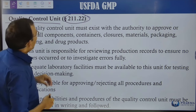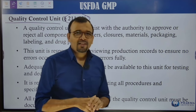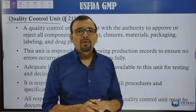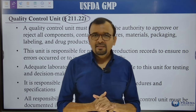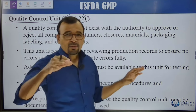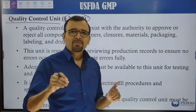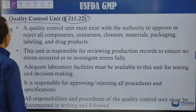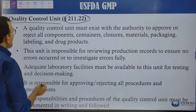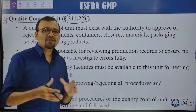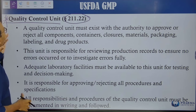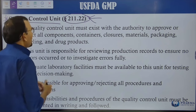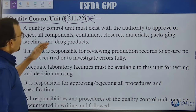Part 211 talks about GMP for drug products. There is another part — Part 210 — for GMP for drug substances. Part 211 covers drug products like capsules, tablets, injectables, etc. In the organization, the first point is the Quality Control Unit, a very important component. Any pharmaceutical company should have a Quality Control Unit, and its requirements are mentioned under Section 211.22.